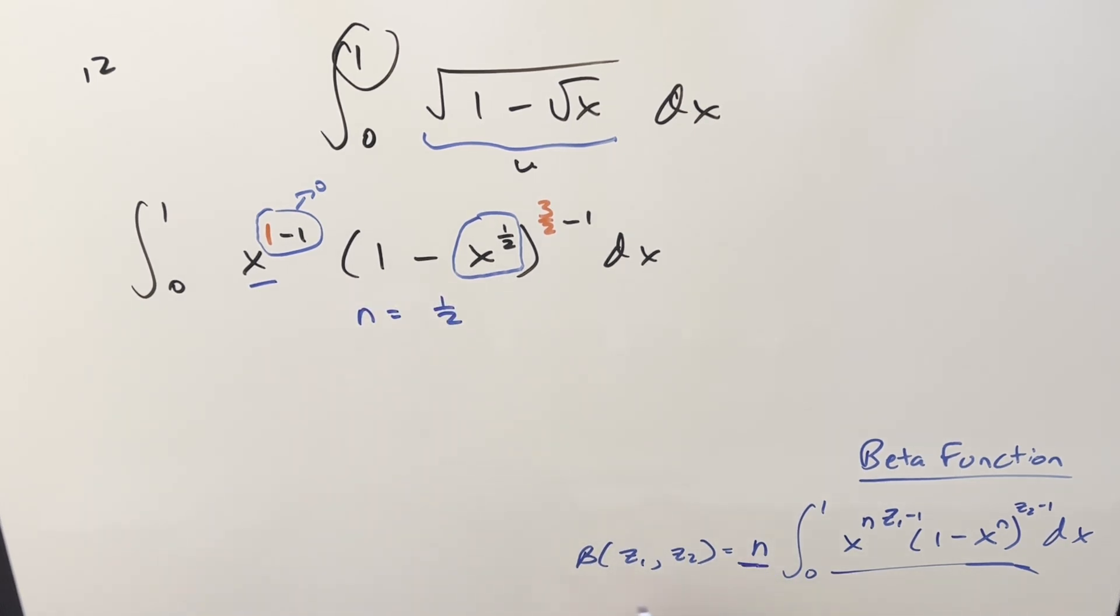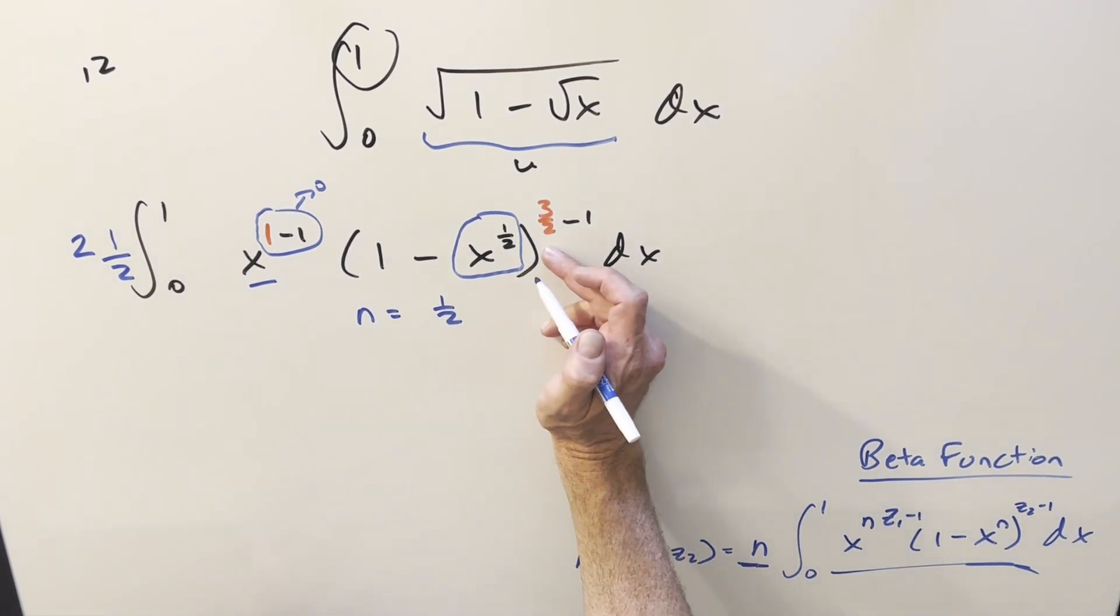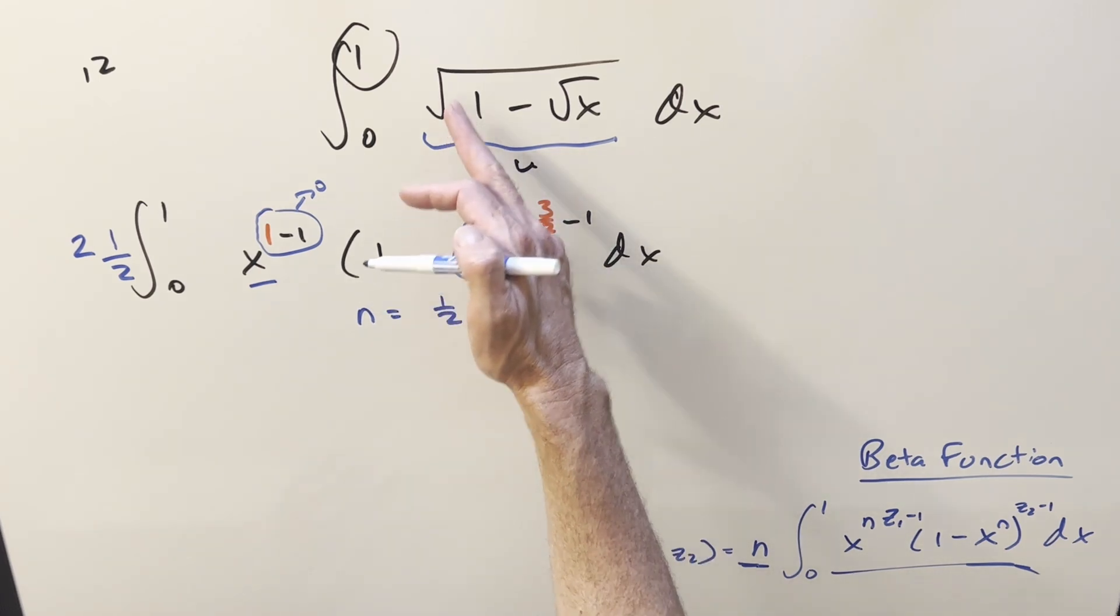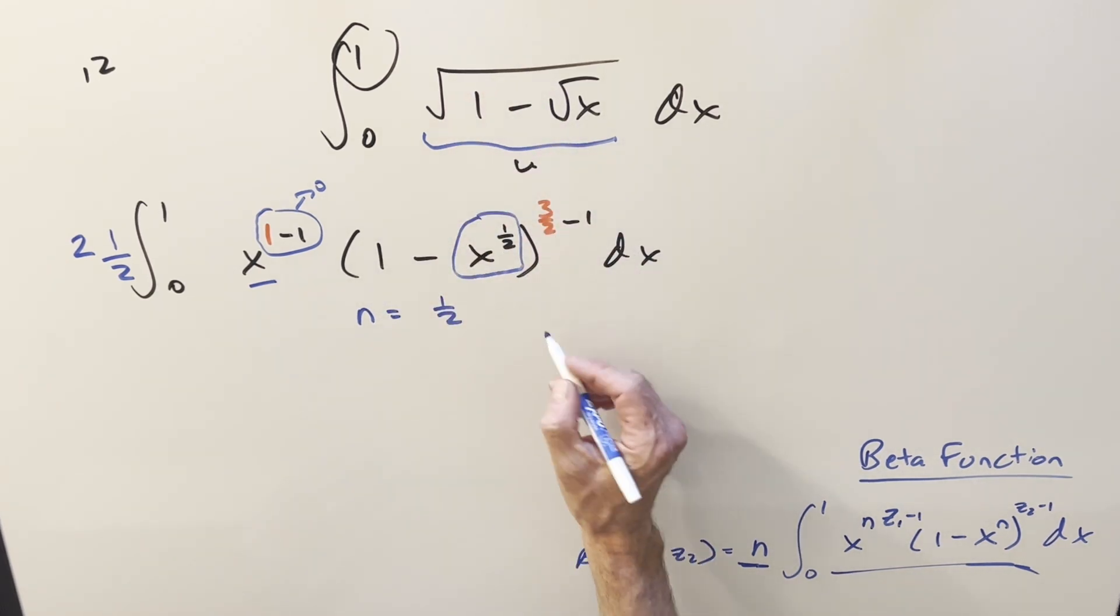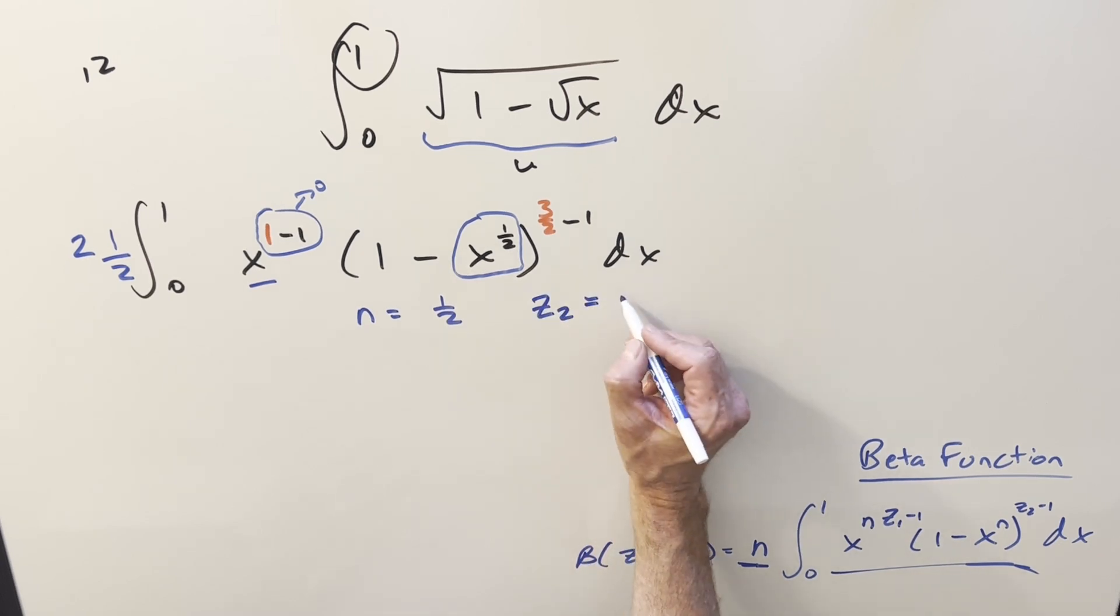Now notice there's an n out front of the integral. So to have this work, we need to create this 1 half, and so that I'm not changing it, we'll multiply in 2. So we just have a 1 out here. Then for this z2 value, that's going to be this exponent in red here, 3 halves. Basically, I just forced that to happen. The square root is 1 half, 3 halves minus 1 is 1 half. So this is going to be the z2 value, 1 half.